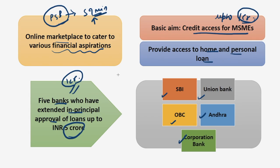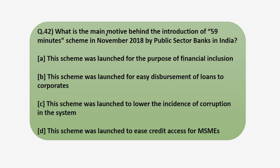Personal loan in-principle approvals are currently provided for a value up to Rs. 15 lakhs only, and home loan in-principle approvals are provided for a value up to Rs. 10 crore, with the rate of interest starting from 8.5% onwards. The initial motive of this scheme was to provide ease of credit access for the MSME sector, so option D is the correct answer.